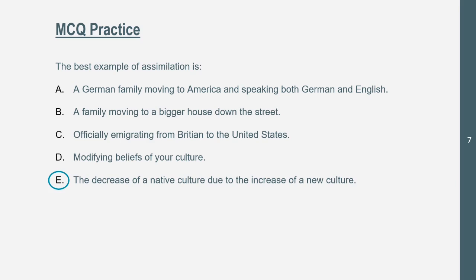Option B is a family moving to a bigger house down the street — not specific enough. Option C is officially immigrating from Britain to the United States — you speak English, you eat a lot of the same foods, it's pretty much just a transition across sides of the world with a few minor changes. That makes E the best answer.